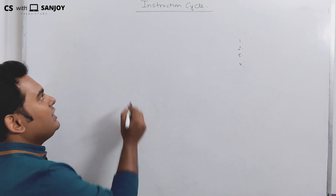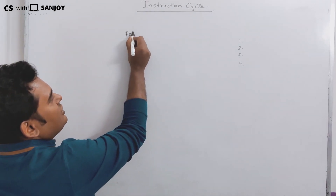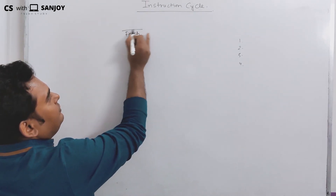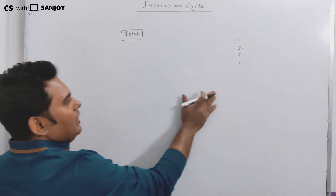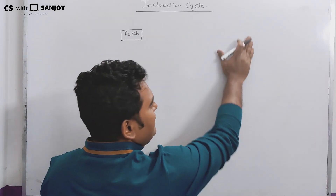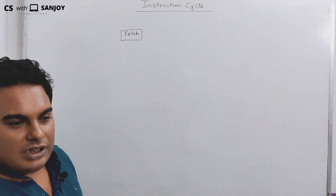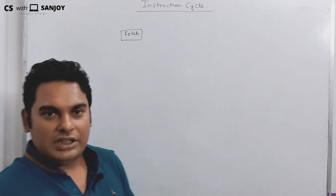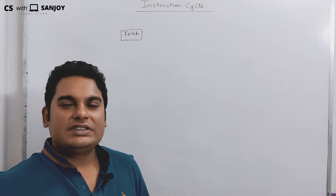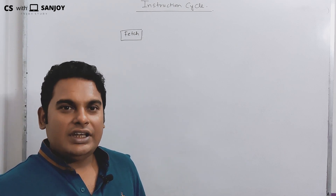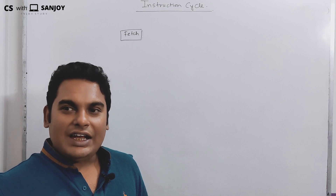There are four phases in the instruction cycle. The first is called fetch. We fetch the instructions from memory. As we know from the von Neumann stored program concept, instructions and data are stored in memory.